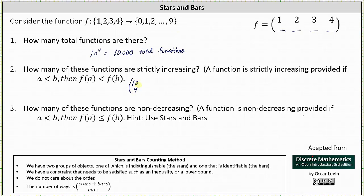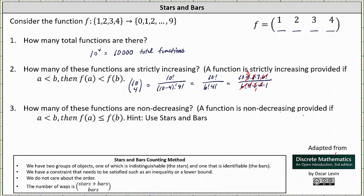10 choose 4 is equal to 10 factorial divided by the product of (10 minus 4) factorial and 4 factorial, which is 10 factorial divided by 6 factorial times 4 factorial. This simplifies to 10 times 9 times 8 times 7 divided by 4 factorial (4 times 3 times 2 times 1). The 6 factorials cancel, 8 and the 4 times 2 cancel, and 9 and 3 share a factor of 3, leaving 10 times 3 times 7, which is 210. There are 210 strictly increasing functions.